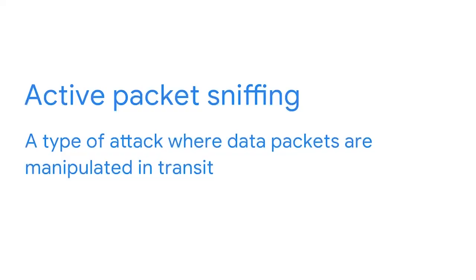Active packet sniffing is a type of attack where data packets are manipulated in transit. This may include injecting internet protocols to redirect the packets to an unintended port or changing the information the packet contains. An active packet sniffing attack would be like a neighbor telling the delivery person 'I'll deliver that mail for you,' and then reading the mail or changing the letter before putting it in your mailbox. Even though your neighbor knows you, they are actively going out of their way to engage in malicious behavior.